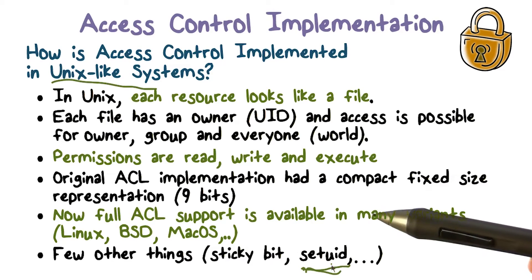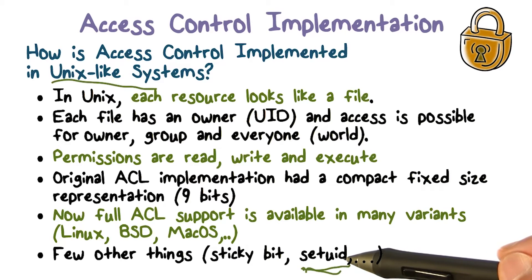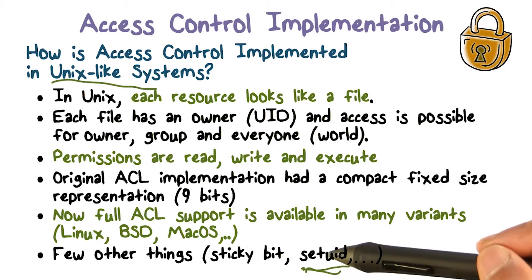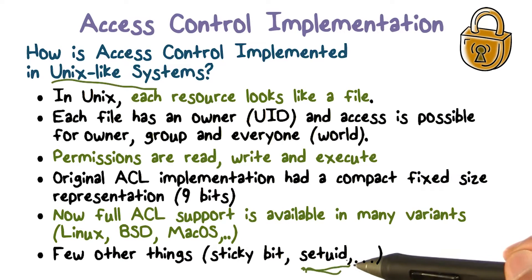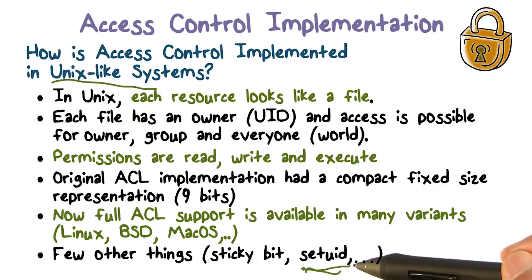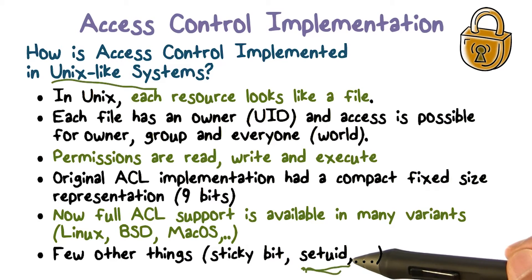Think about a game program that needs to update a file that stores scores for different people who have played this game. When people are playing the game, we want to be able to update that file — when your score increases, you want to update your score. So these users, while playing the game, need to have write access to that file. When they're not playing the game, we don't want them to have write access, because then they can change the score without playing. So how can we solve this problem?